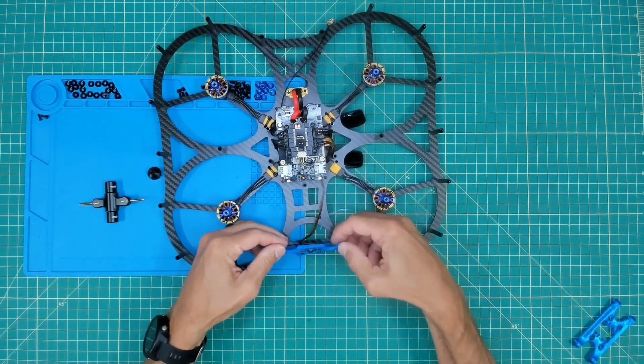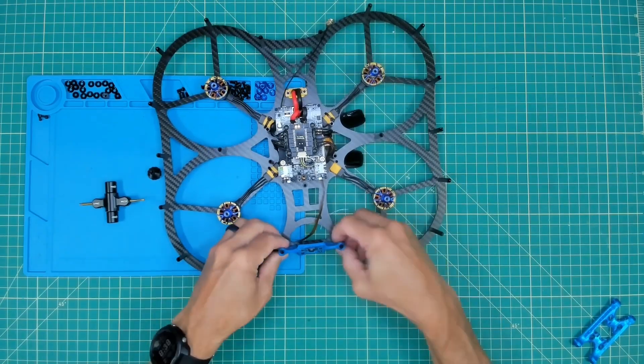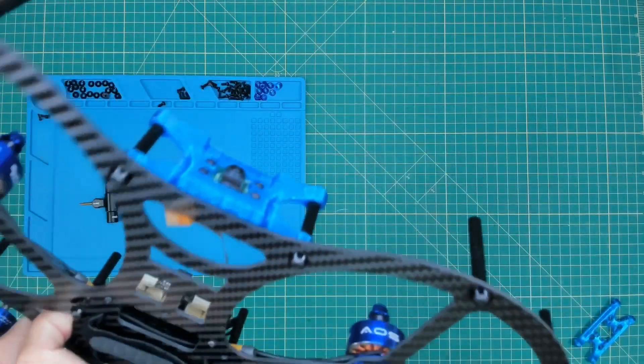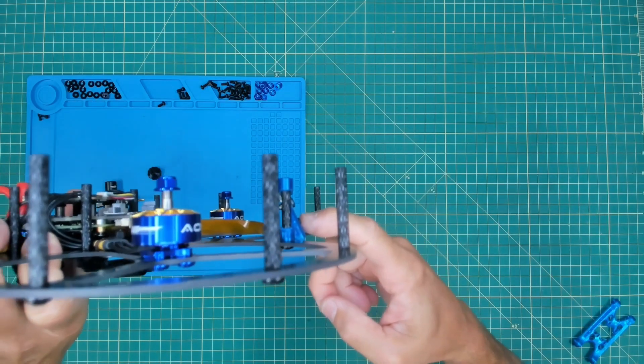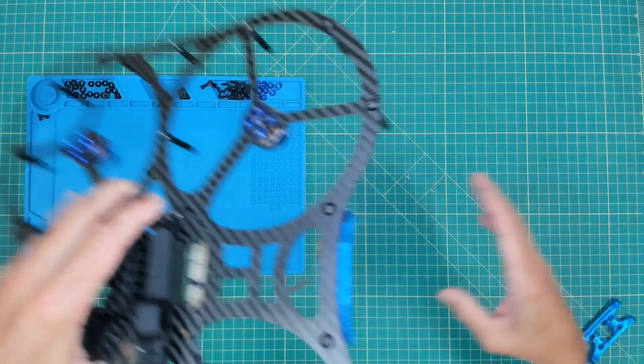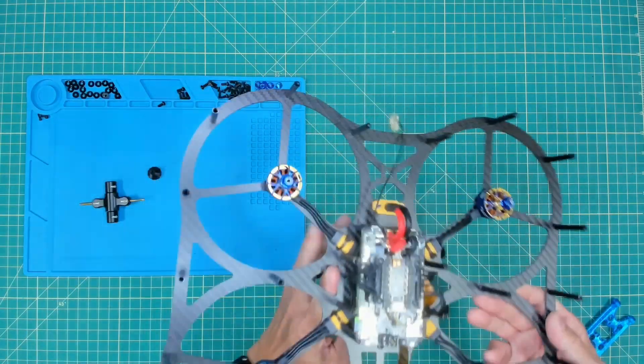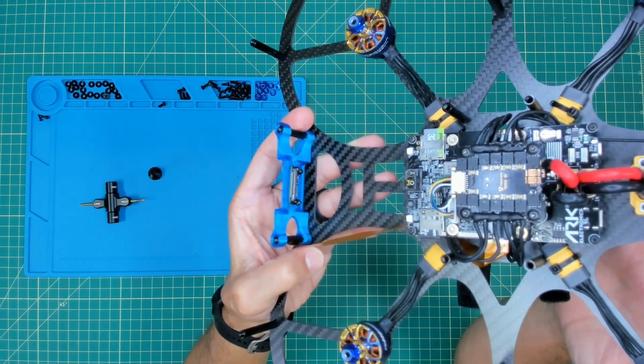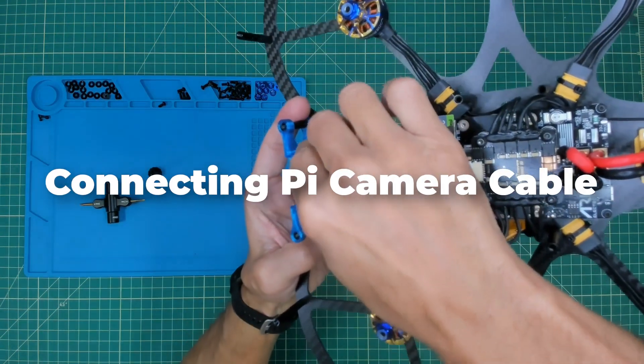Now you'll notice the camera pointed down towards the ground. This gives us a nice field of view for us to do some cool stuff with computer vision in the future. On the rear of the camera board you'll notice this port.